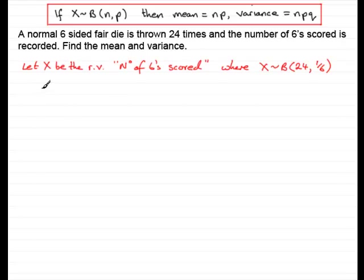So if we're to find the mean, then the mean is going to be equal to n times p. So n is 24 and p is 1 sixth. So 24 times 1 sixth. 24 times 1 sixth is going to be 4. So we would expect 4 sixes if you threw the die 24 times.